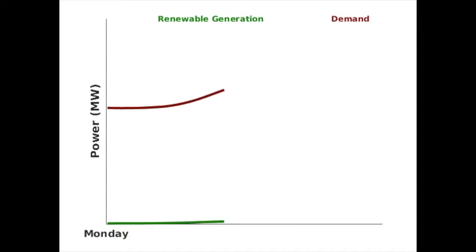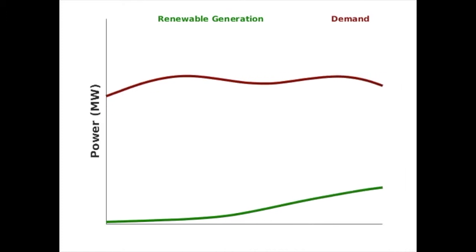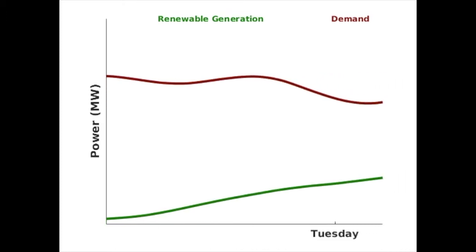However, renewable generation is unpredictable and intermittent, which does not match with power demand. This difference between total demand and renewable generation is known as net demand.